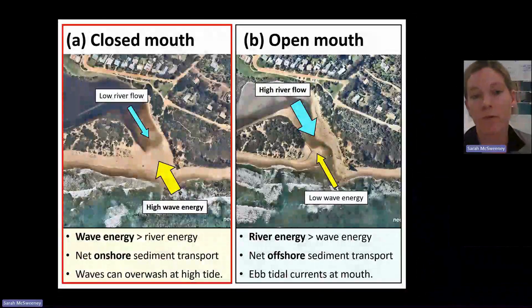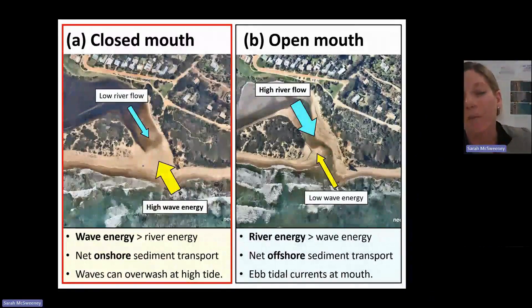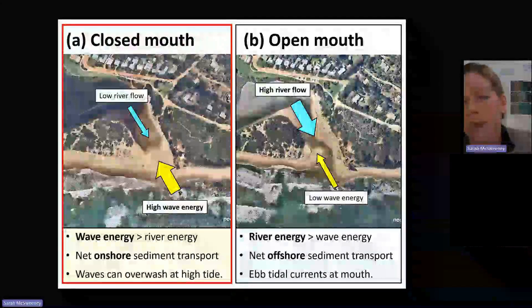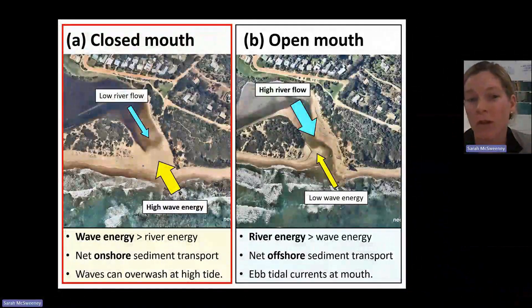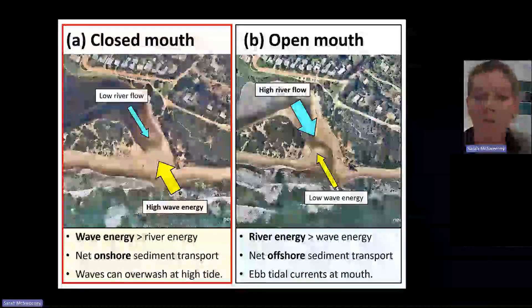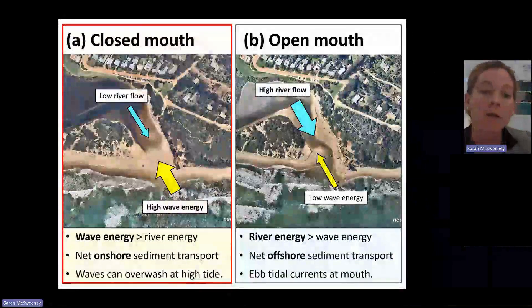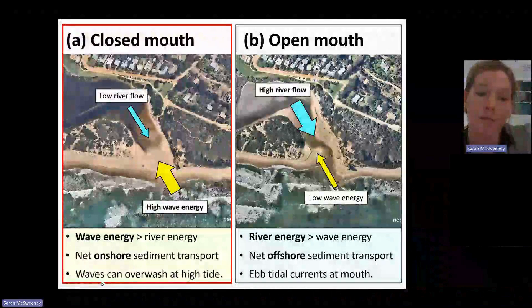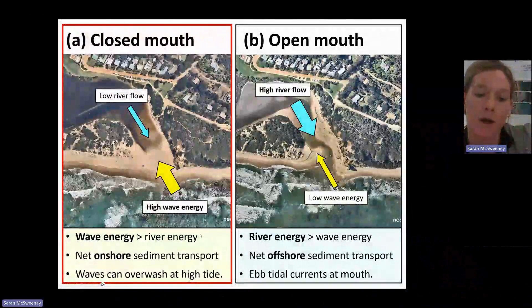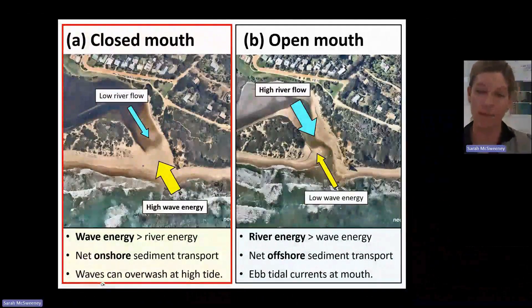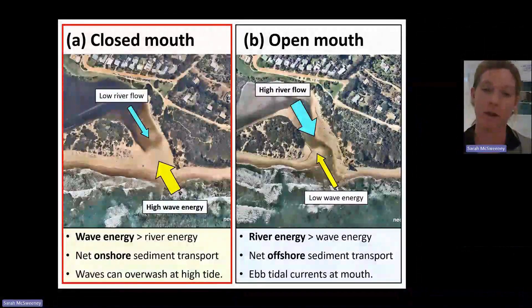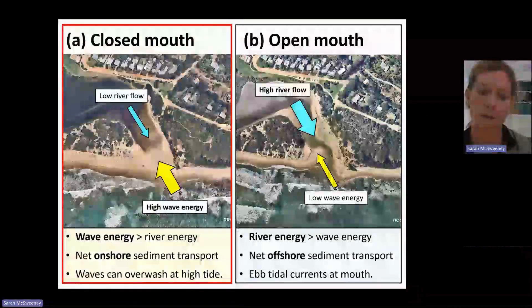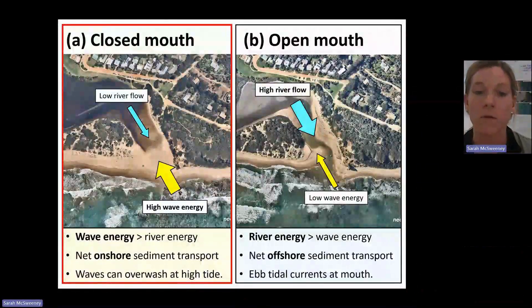For example, in our closed state, we have low river flow — usually during summer times and drought periods — and then relative to that, we have high wave energy coming from the ocean side. So the net direction of sediment transport is onshore. The waves have enough energy behind them and they start to build the berm or sandbar at the mouth.